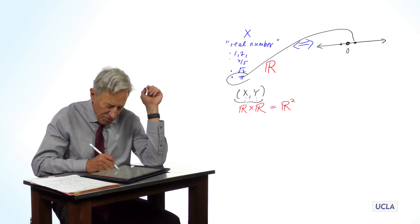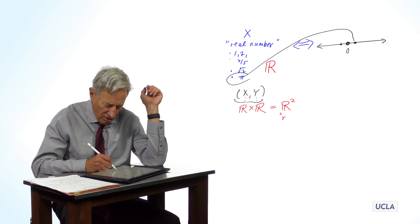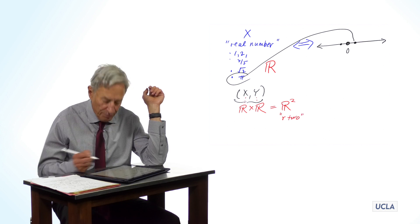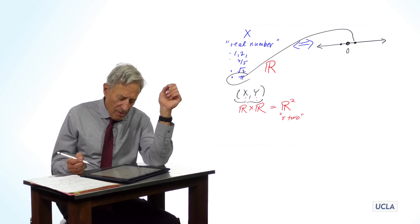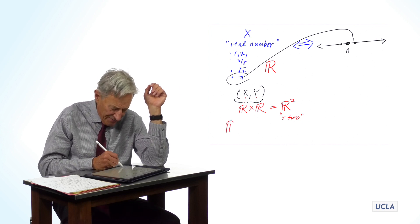Most mathematicians, in fact, refer to this as R2. So, R2 is just, and this is a definition, R2 is just the set of all pairs, x, y,